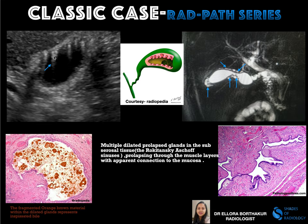These ring-down artifacts are mainly due to the inspissated bile within the Rokitansky-Aschoff sinuses, which are significantly dilated in cases of adenomyomatosis. This is the classic case — the inspissated bile causes ring-down artifacts within the dilated Rokitansky-Aschoff sinuses. Similarly, on MRCP, the dilated sinuses appear as cystic areas along the wall of the gallbladder, giving the classic 'pearl necklace' appearance.